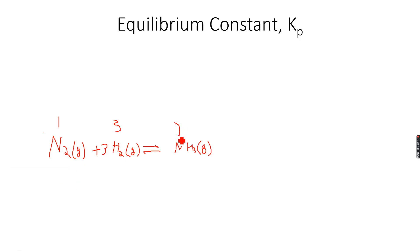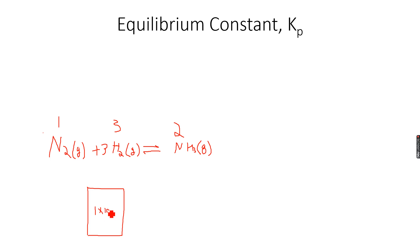Equilibrium amounts are not changing, so I have 1 mol of N2, 3 mols of H2, and 2 mols of NH3 at equilibrium. For example, I have a closed vessel and the pressure inside it is 1×10⁵ pascals, which is about atmospheric pressure (atmospheric pressure is around 1.01×10⁵ pascals). So the pressure inside this vessel is 1×10⁵ pascals.